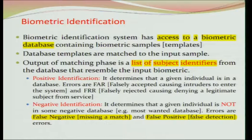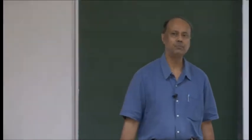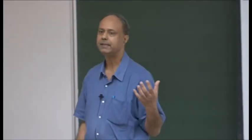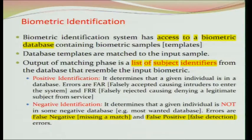It is expected that once a biometric identification system is developed, it should allow use of the database, otherwise it will be difficult. The matching algorithm should be able to match the query template against all templates in the database. The output will be a list of subjects similar to the input biometric data. There are two terms: positive identification and negative identification.